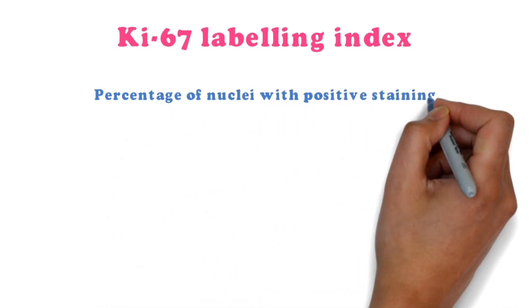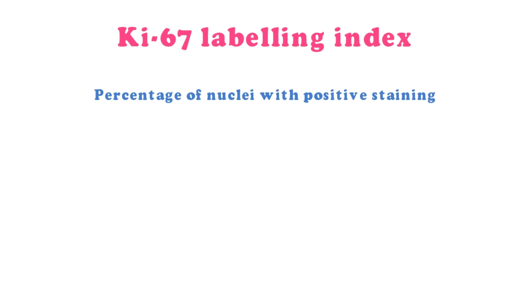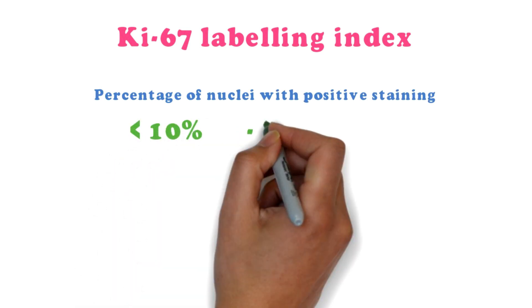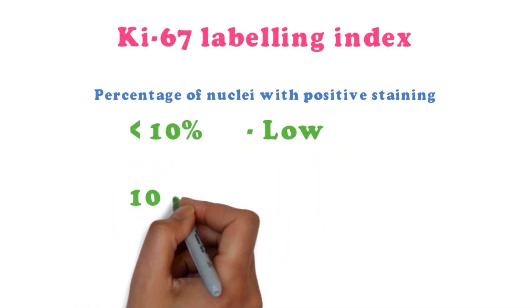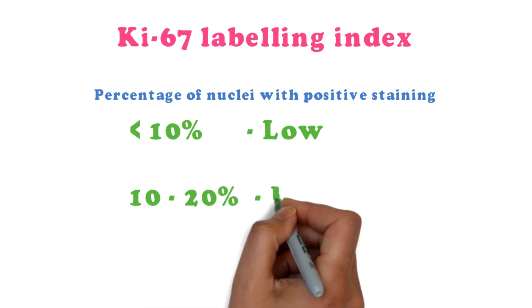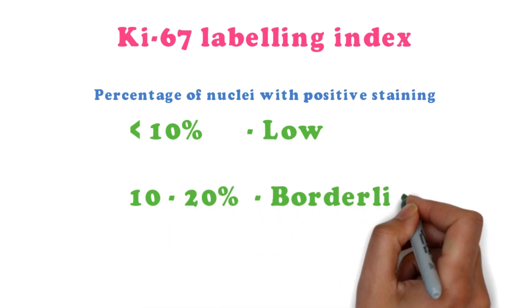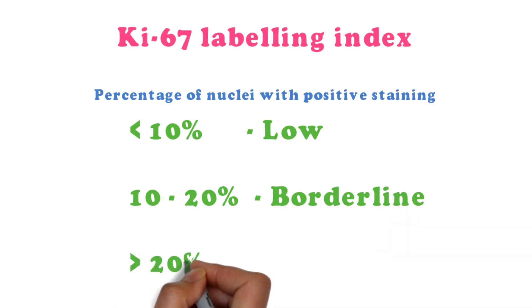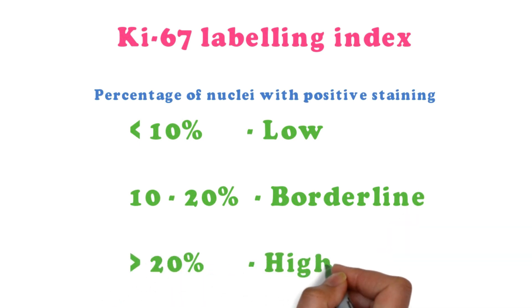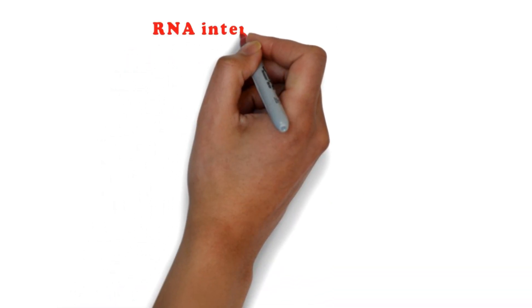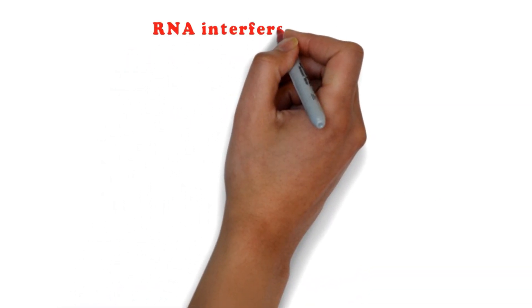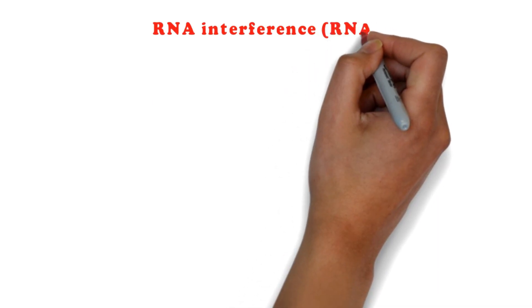Now let's talk about the ki-67 labeling index. By calculating the percentage of nuclei with positive staining, a tumor can be classified as low, intermediate, or highly proliferative. If less than 10% of cells show positive staining, it is scored as low. If 10 to 20% of cells show positive staining, it is borderline. And if more than 20% of cells show positive staining, it is scored as high.